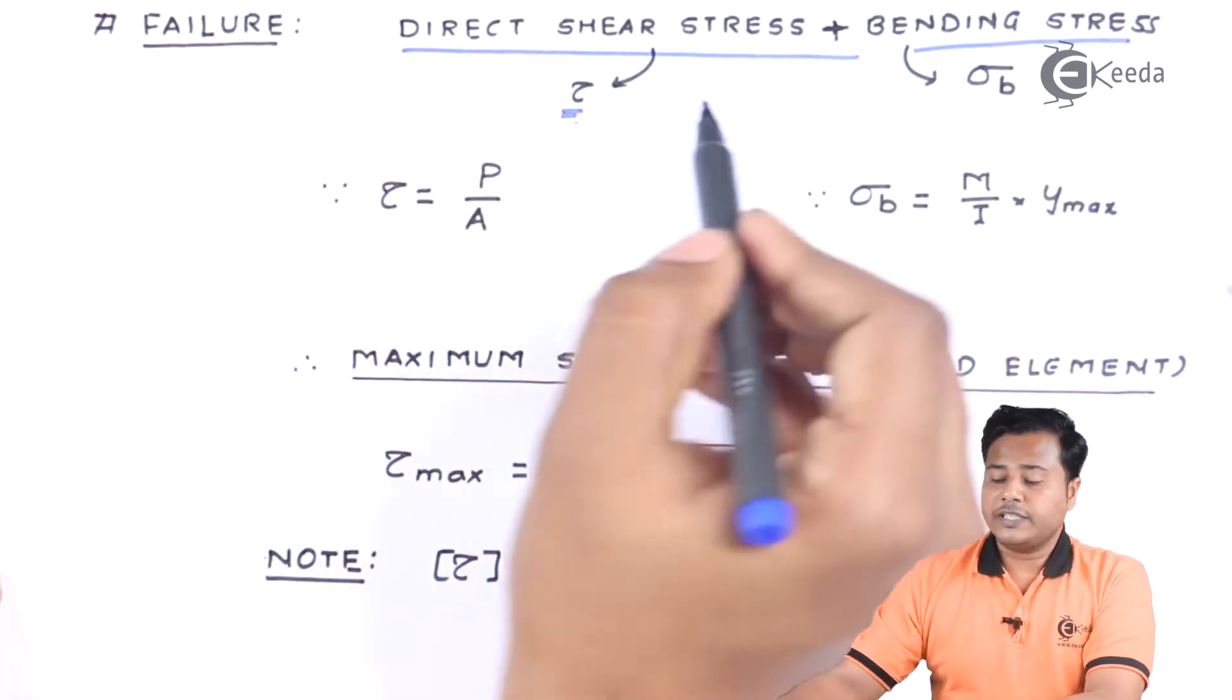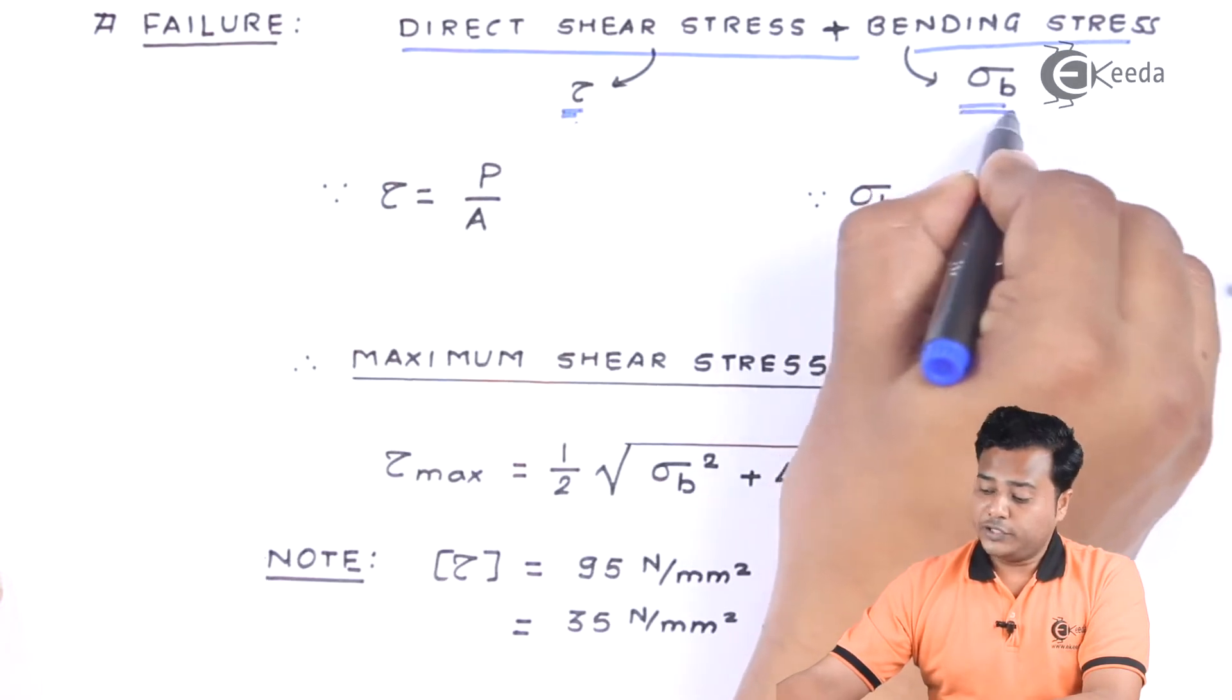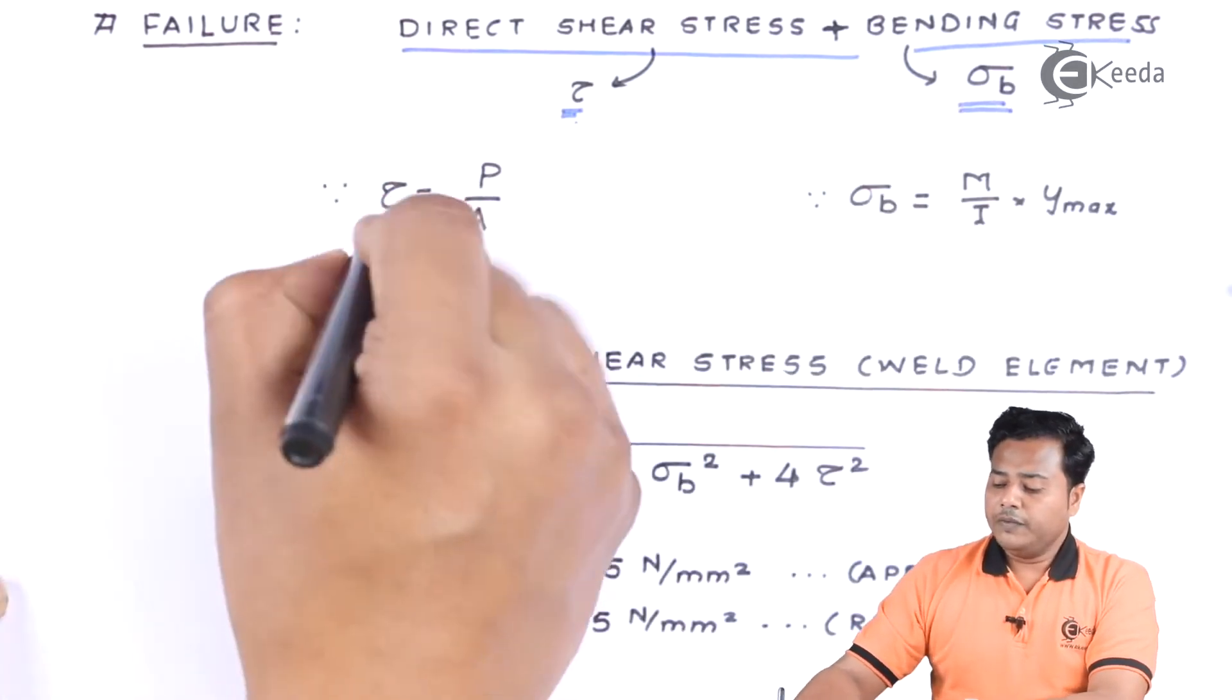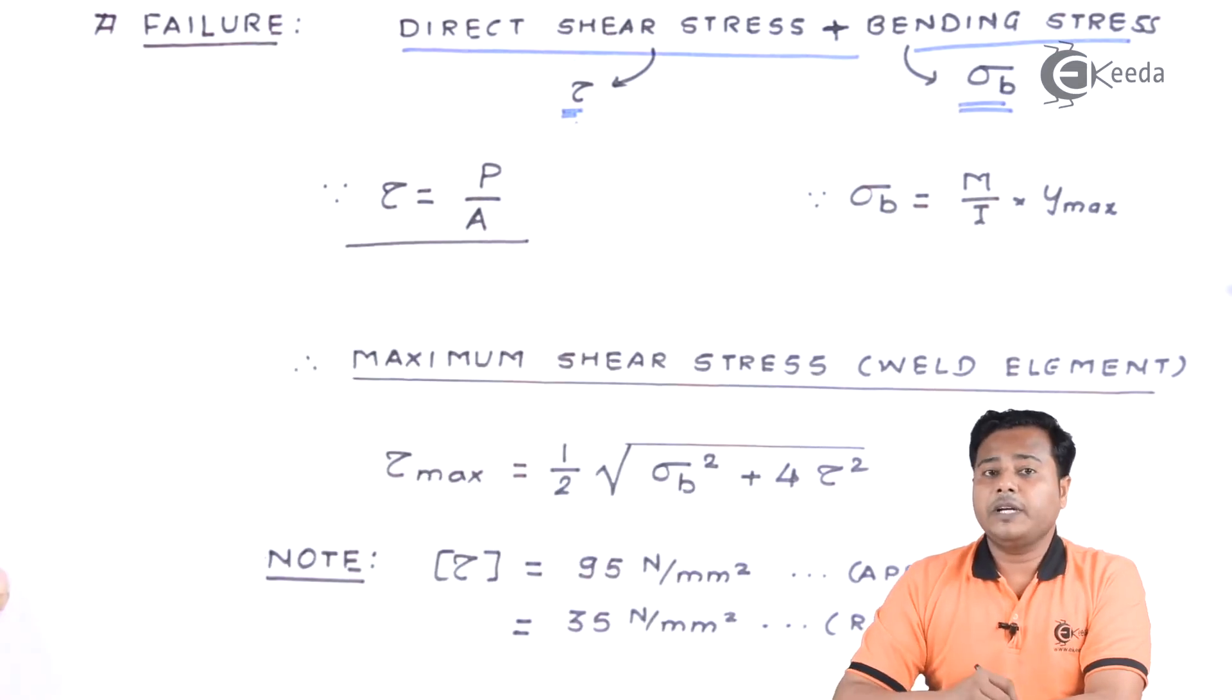Let us name the shear stress as tau and bending stress as usual as sigma b. With that we know that direct shear stress will be given by the force divided by area of cross section which is undergoing the shear.